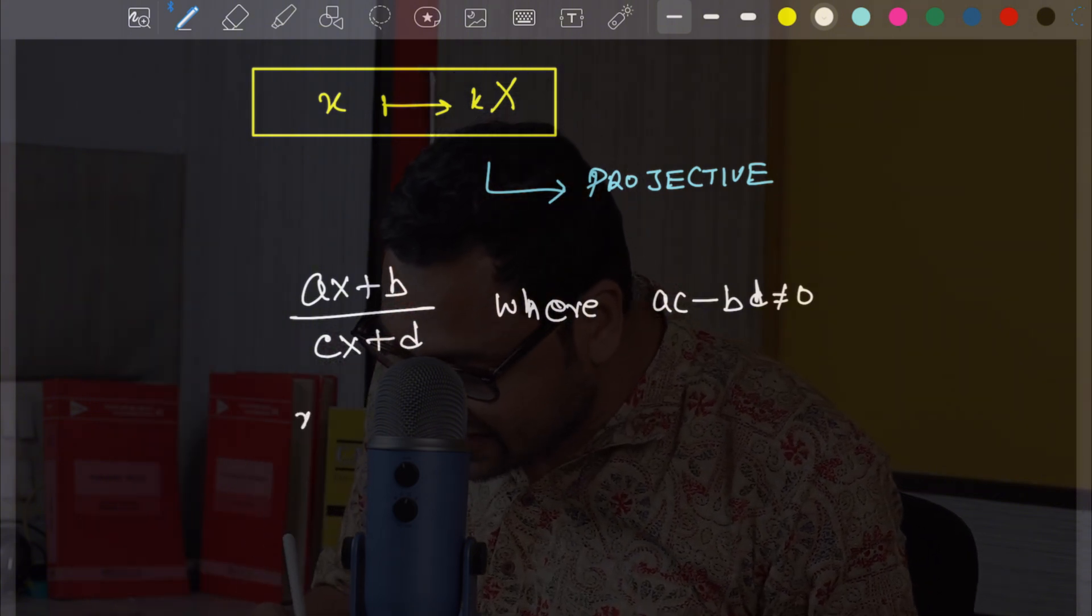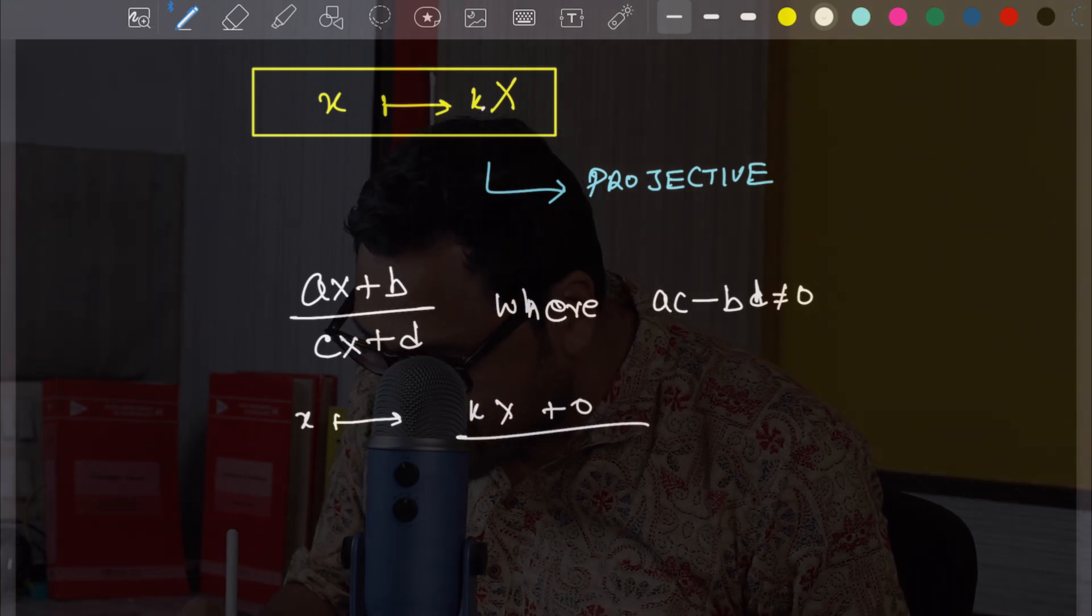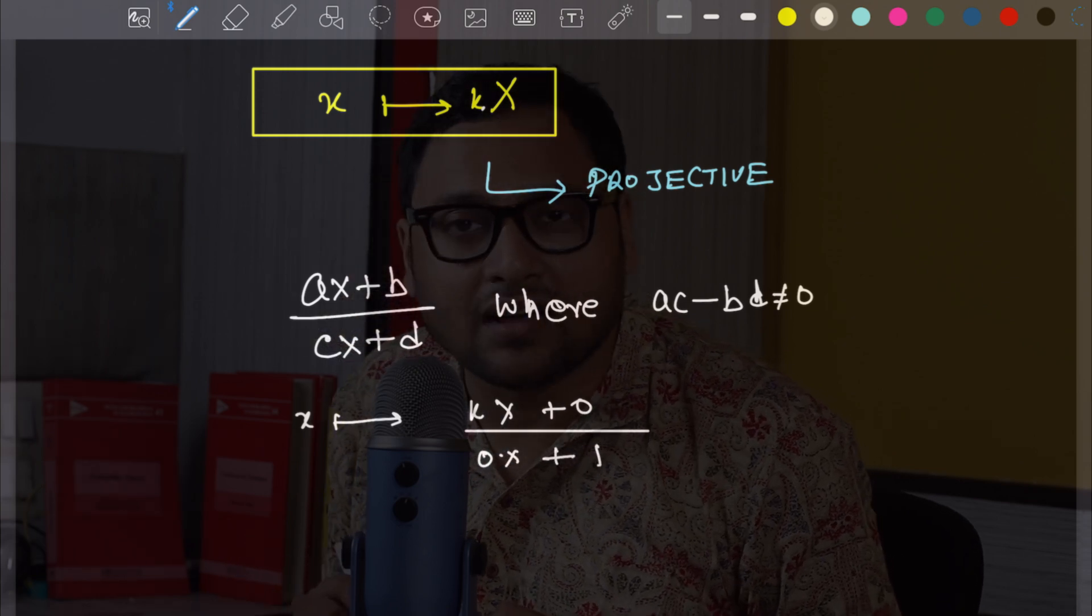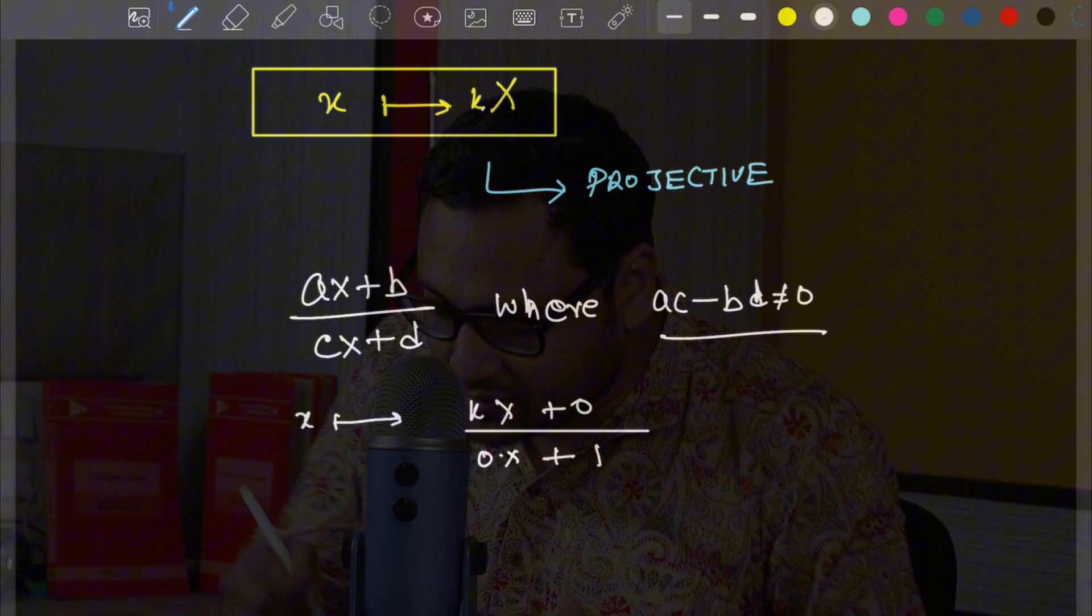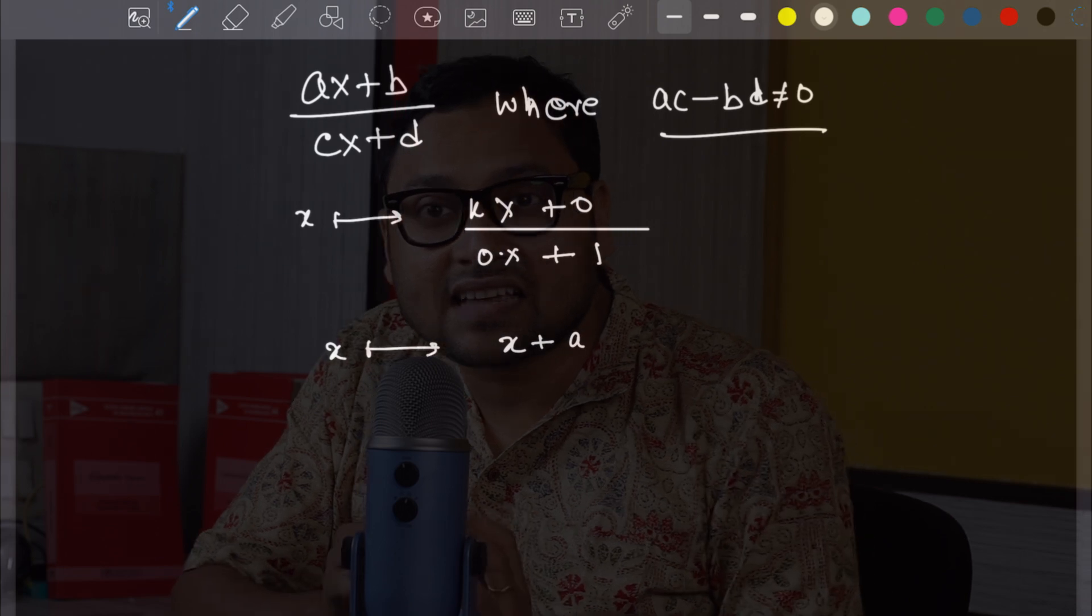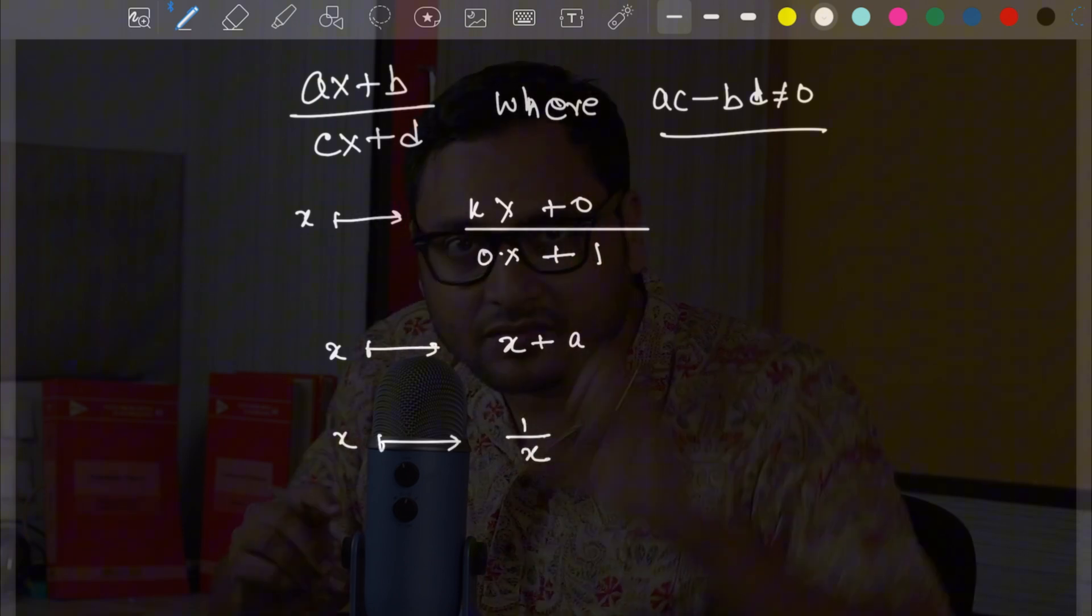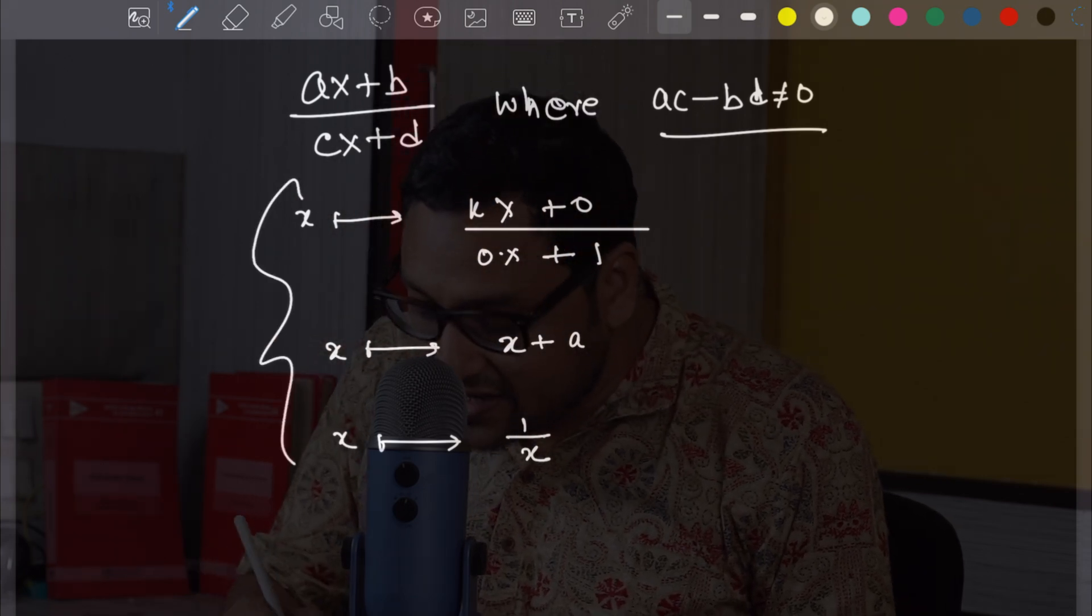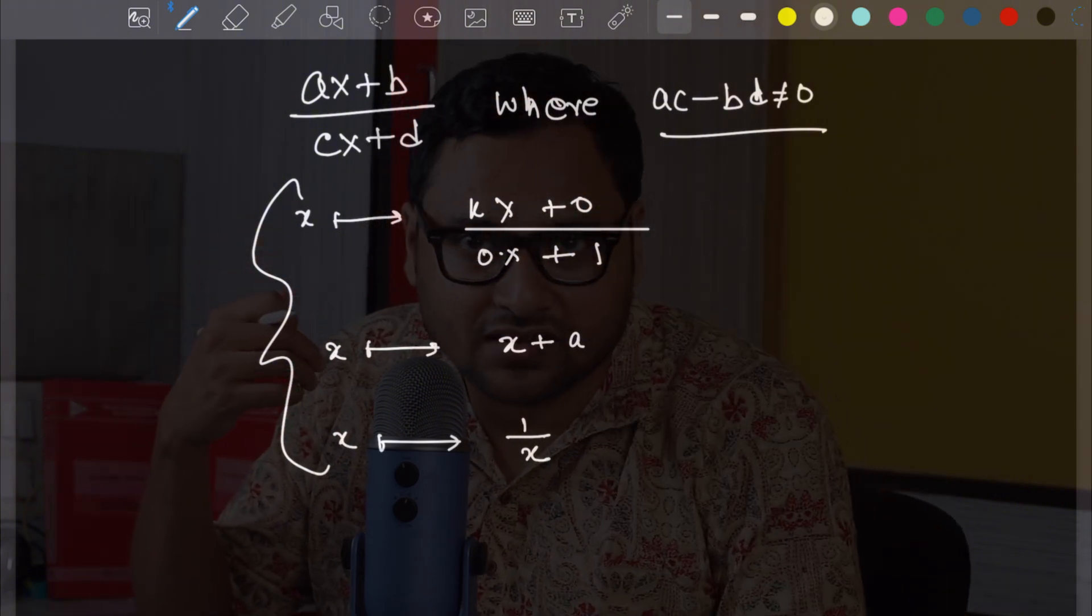Here, the formula was X going to KX plus 0 divided by 0X plus 1. This is the formula. So, it fits into this AD minus BC not equal to 0 perfectly. There are other projective transformations, for example, X going to X plus A. This is a translation. You are just moving it by A units. There is another one. X going to 1 by X. It's called reciprocation. This is also a projective transformation. In fact, these three are the fundamental projective transformations. Using them, you can create any other projective transformation.